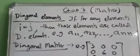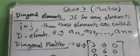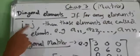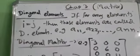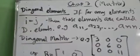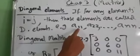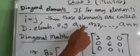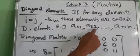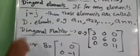Now, Diagonal Elements. What are Diagonal Elements? If for any element, i becomes equal to j, then those elements are called Diagonal Elements. For example, a₁,₁ — in this case i is 1, j is also 1, that means this is a diagonal element. Similarly a₂,₂, and so on up to aₙ,ₙ.